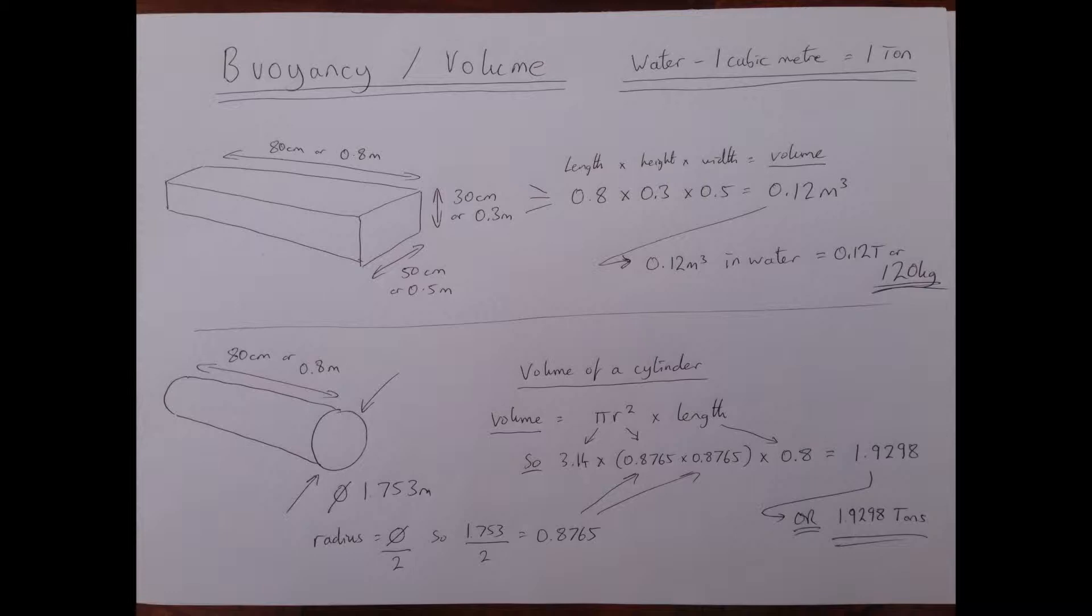Likewise below I have the volume of a cylinder which I have used quite a lot on Pipe Dream. That is pi r squared which gives you the area of the circle, and then you times it by length to get the area of the cylinder. So pi is 3.14 times r which is radius. You just take the diameter, divide it by 2 to give you the radius, then times it by itself and then times that by the length, which in this case comes out to 1.92 tonnes.